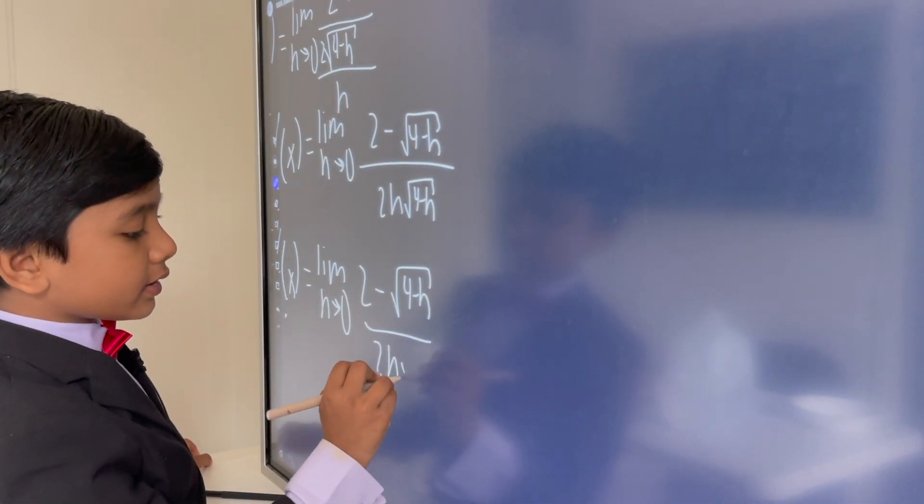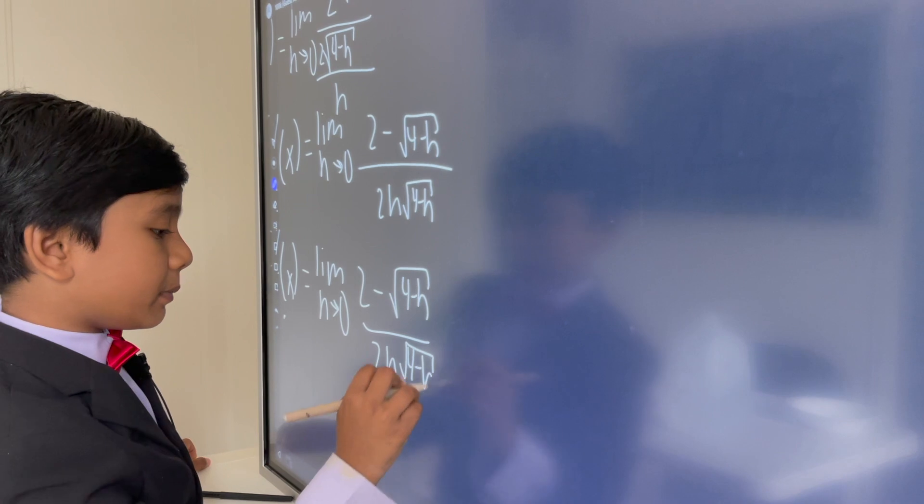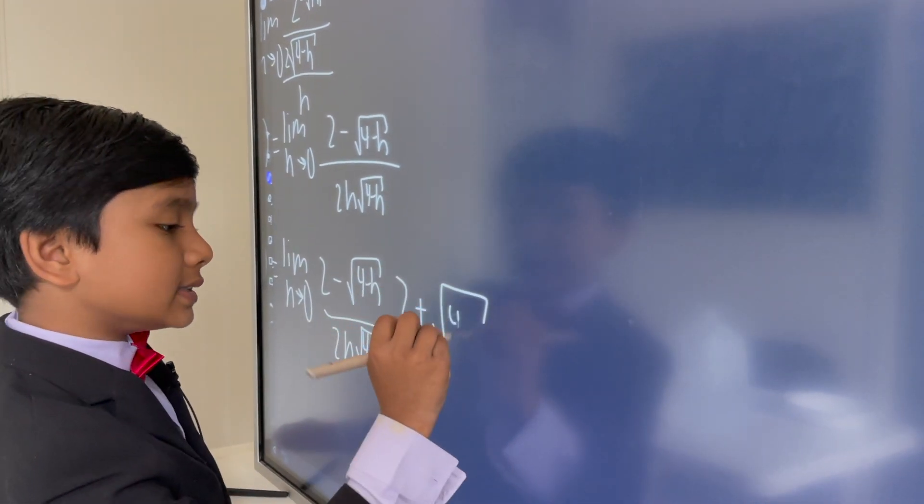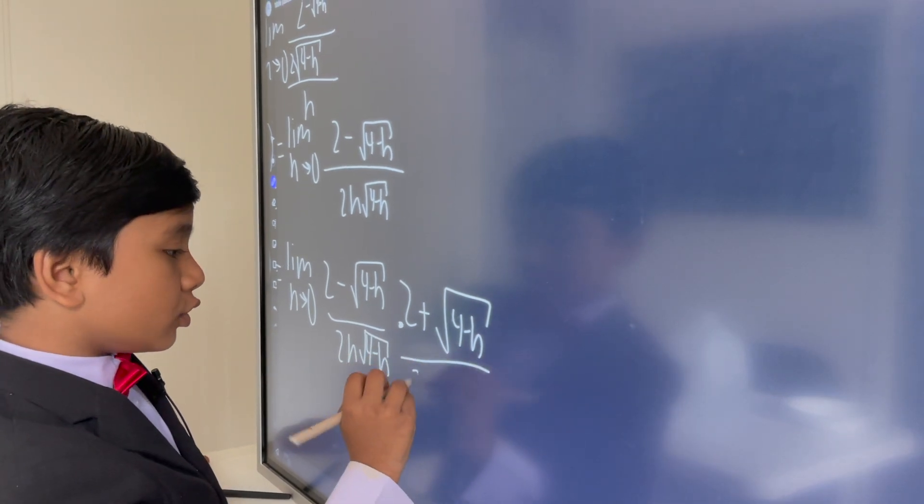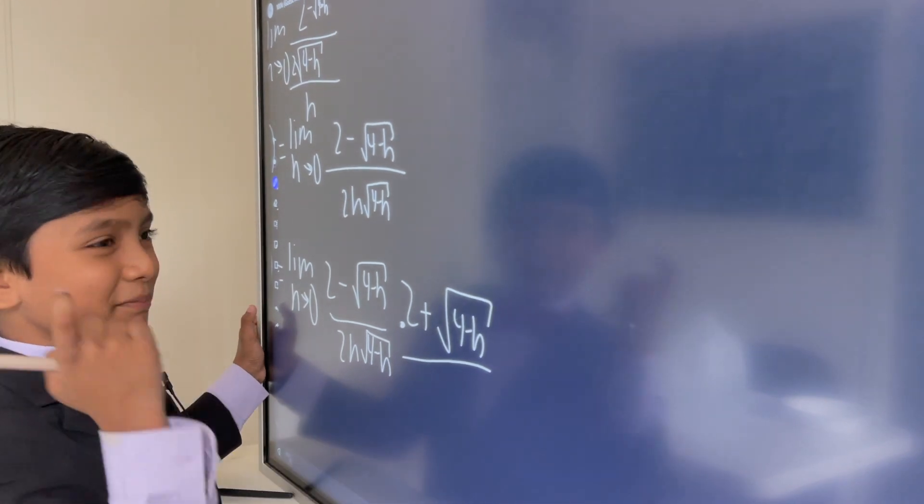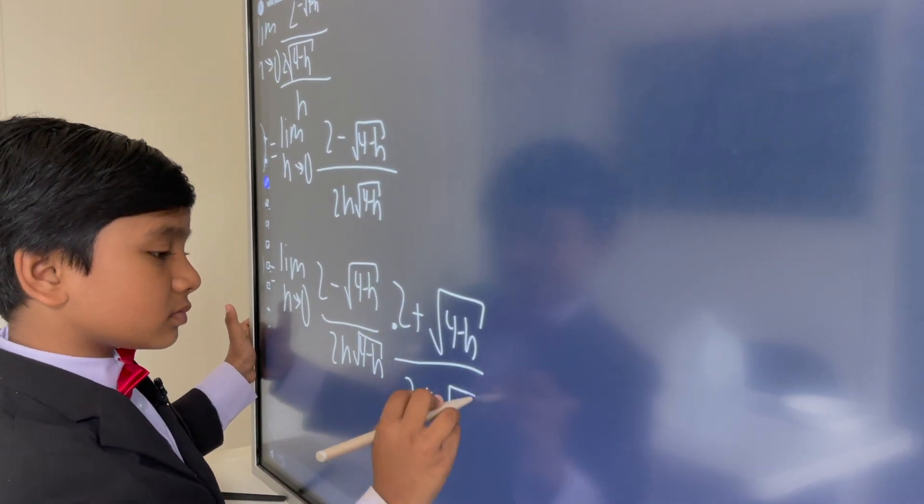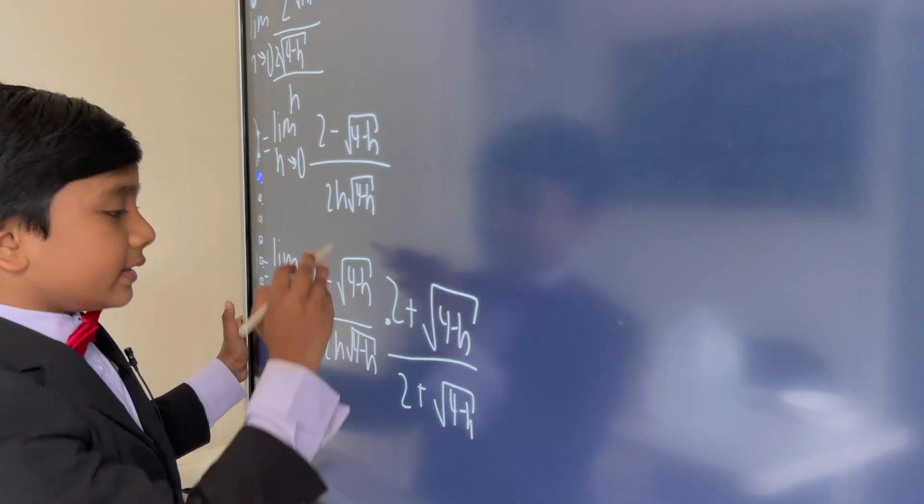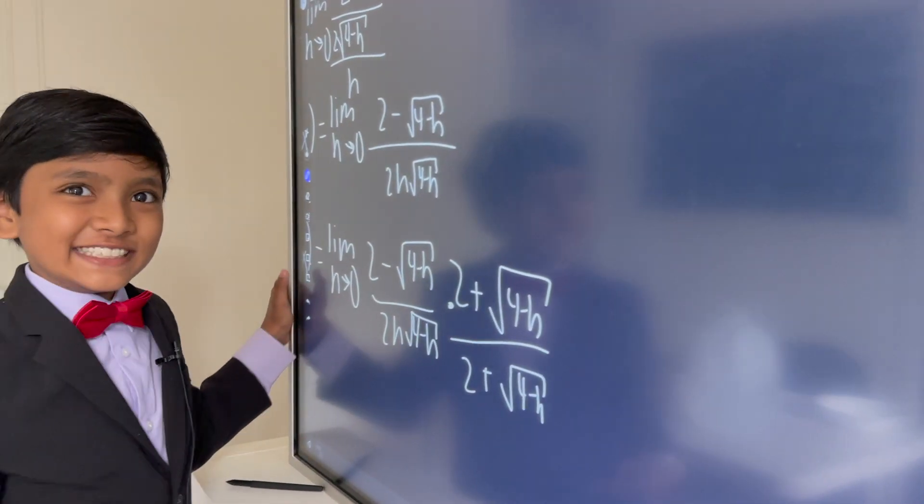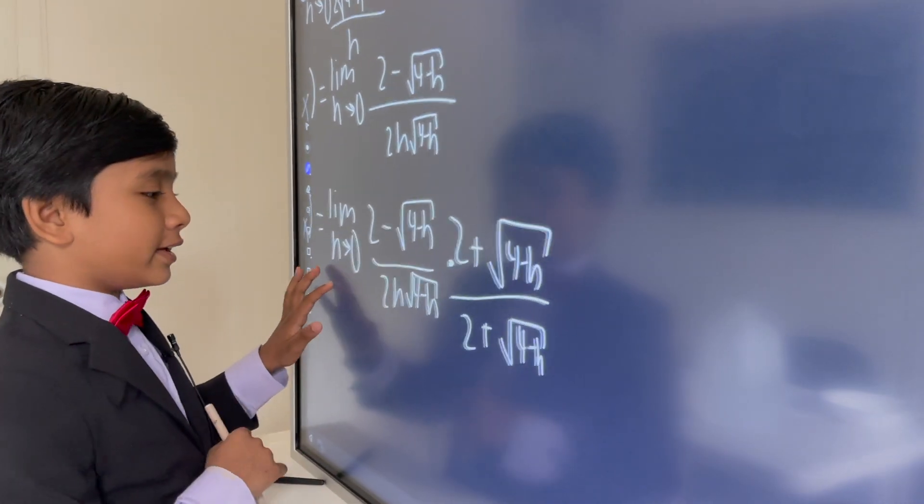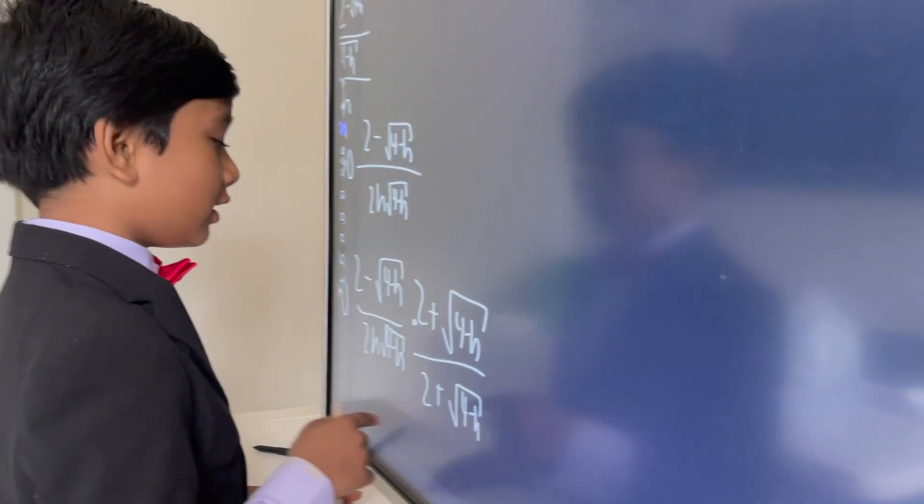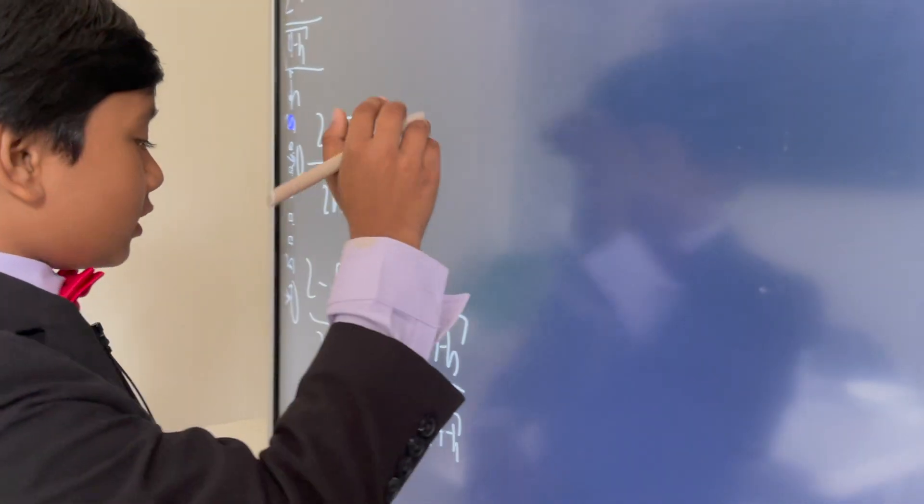So, what we're going to do is we're going to multiply this by the fraction 2 plus square root of 4 minus h divided by 2 h square root of 4 minus... oh, no, no, sorry, sorry. It's a bit absent-minded. And this takes advantage of the difference of squares to re-rationalize our numerator. So, let's get ready for some distributing. Tick-tock, tick-tock, don't use tick-tock.